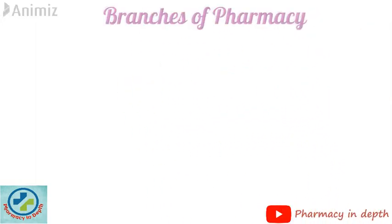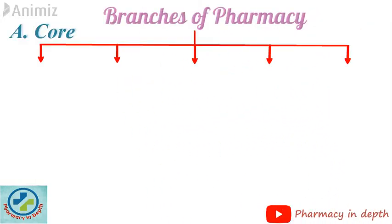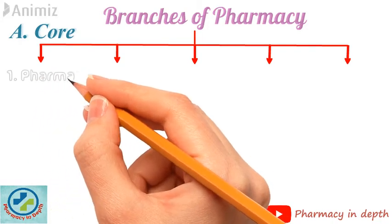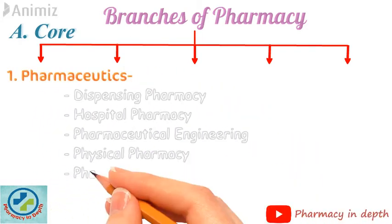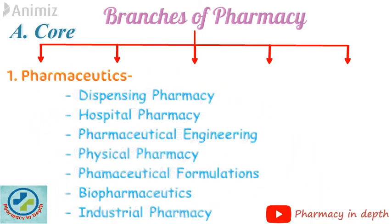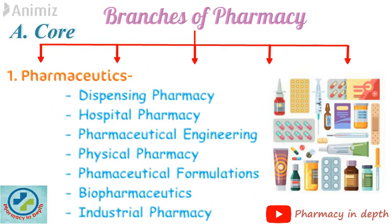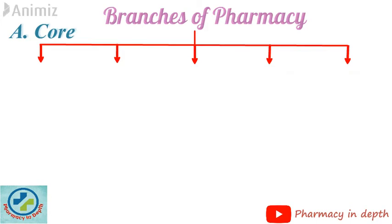Let's understand different branches and subjects of pharmacy in India. We have 5 core branches. The first one is called Pharmaceutics. It has subjects like Dispensing Pharmacy, Hospital Pharmacy, Pharmaceutical Engineering, Physical Pharmacy, Pharmaceutical Formulations, Biopharmaceutics and Industrial Pharmacy.